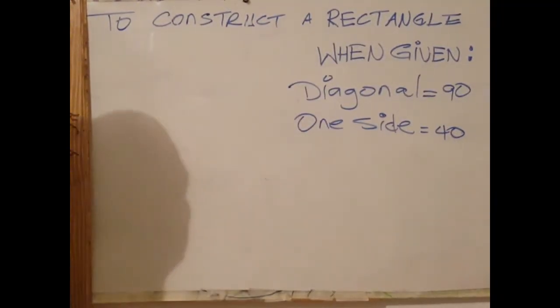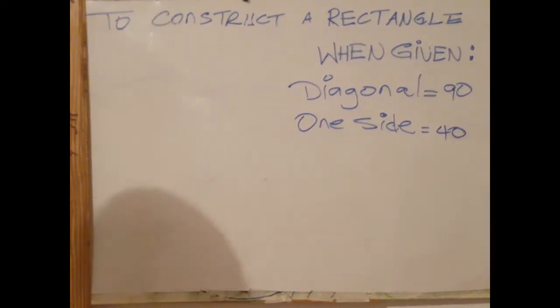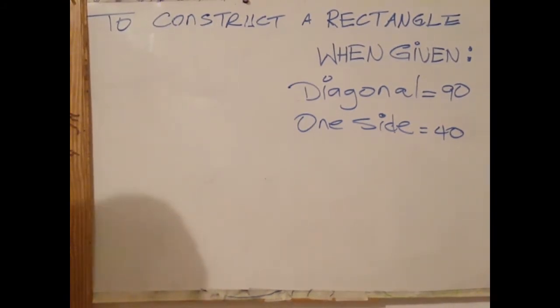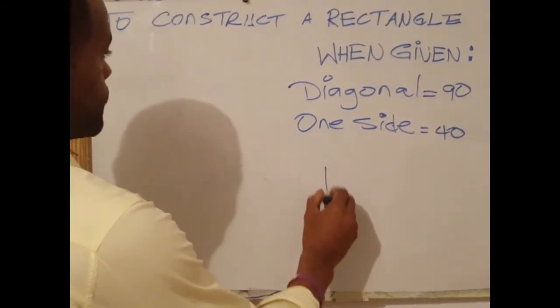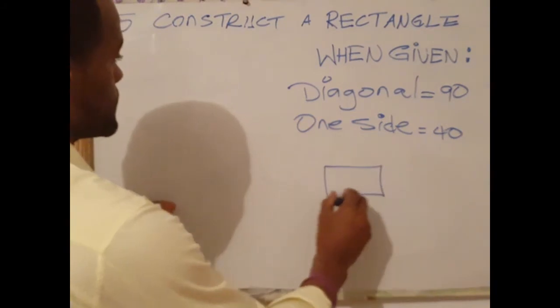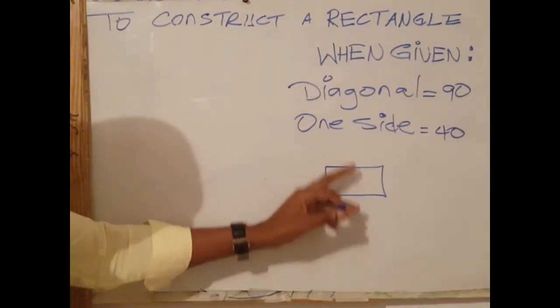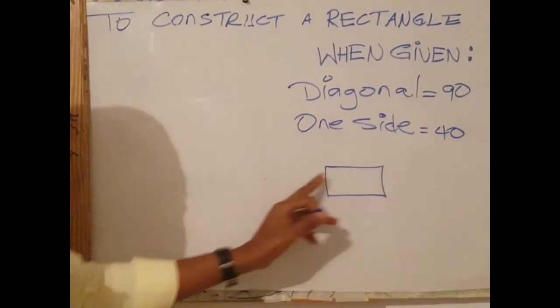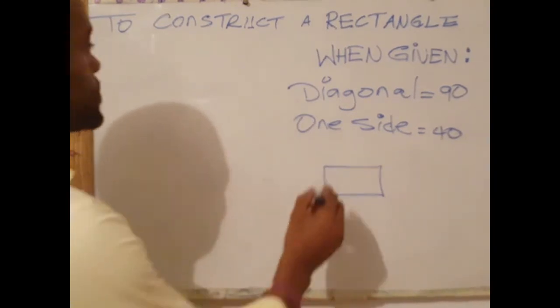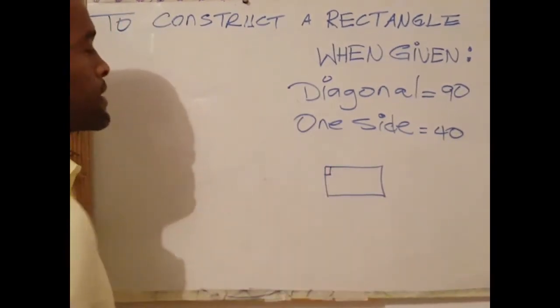Welcome back. Today I am looking at the construction of a rectangle. A rectangle is a figure that has four sides, two adjacent or opposite sides are normally equal. It also has four right angles.